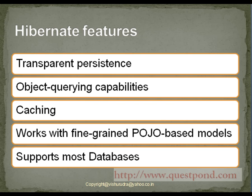Hibernate makes persistence transparent to the end user. It supports a variety of object querying capabilities by introducing its own query language known as HQL and Criteria. It also has support for named queries and even support for native SQL queries when required. It supports caching — that is, storing of objects in case they need to be used again — at a level much better compared to other tools. Hibernate works with fine-grained plain old Java objects and supports most databases using the concept of dialect.